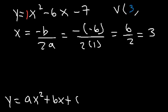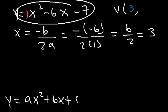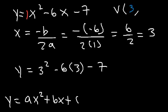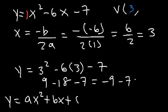Now we need to find the y-coordinate, so let's plug in 3 into the original equation. It's going to be 3 squared minus 6 times 3 minus 7. 3 squared is 9, 6 times 3 is 18, and 9 minus 18 is negative 9. Negative 9 minus 7 is negative 16. So k is negative 16.